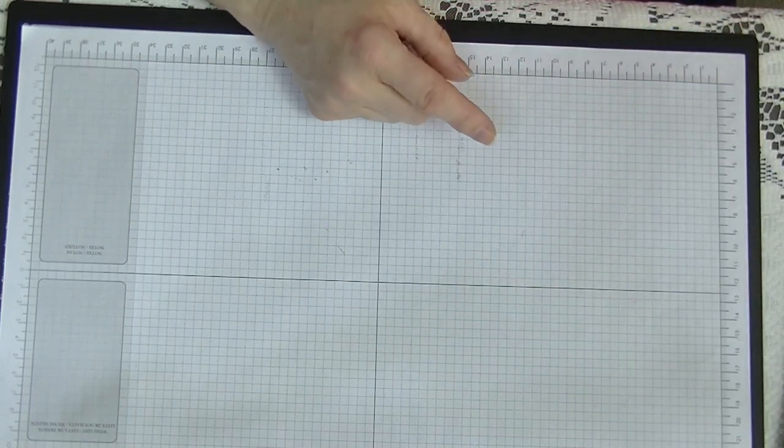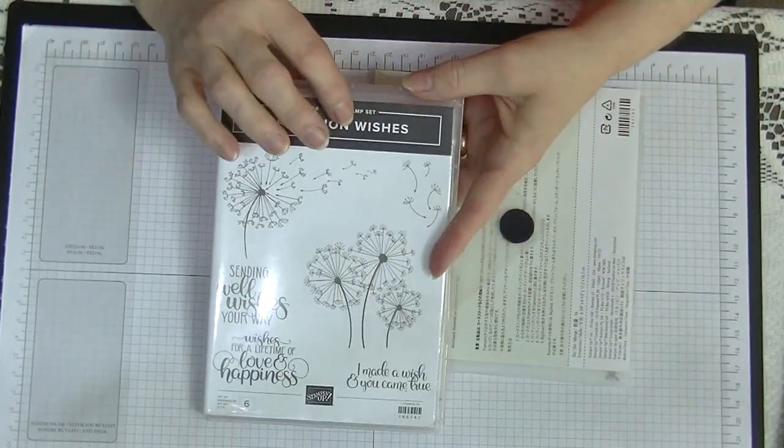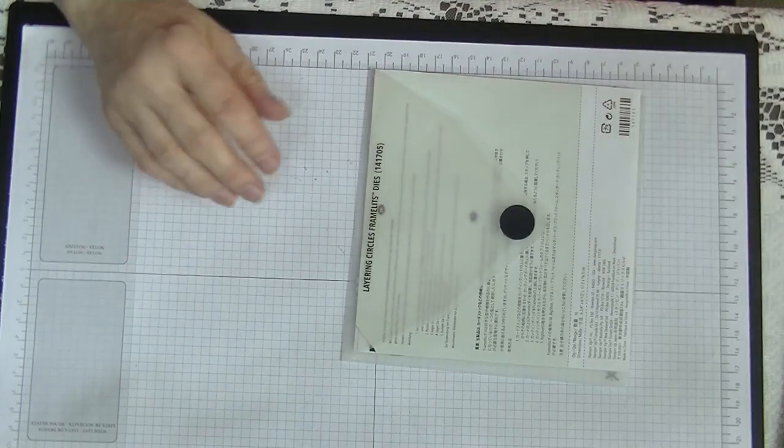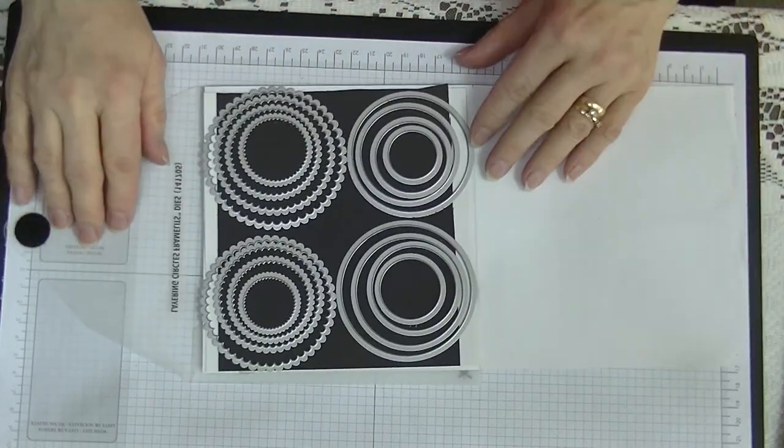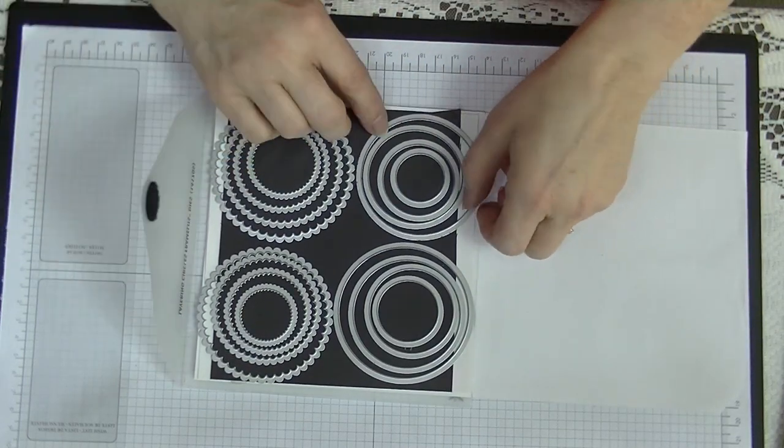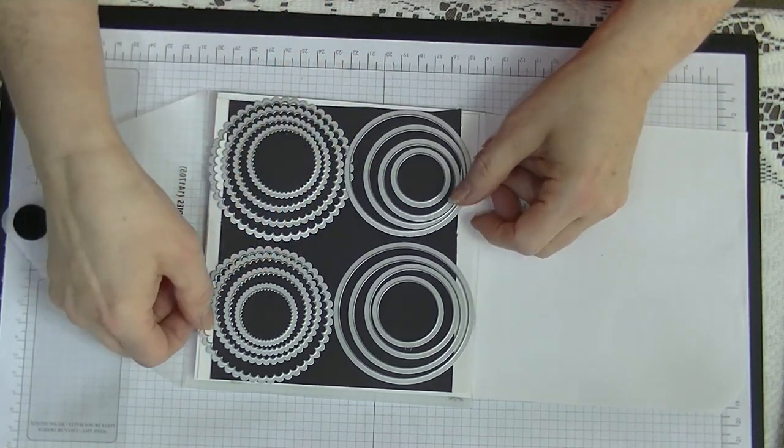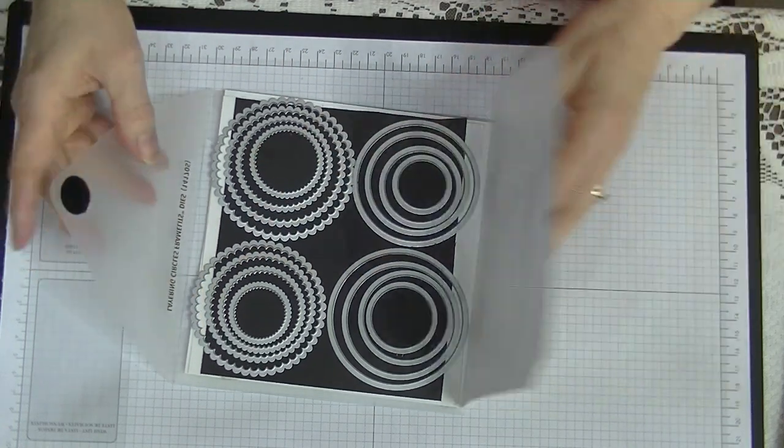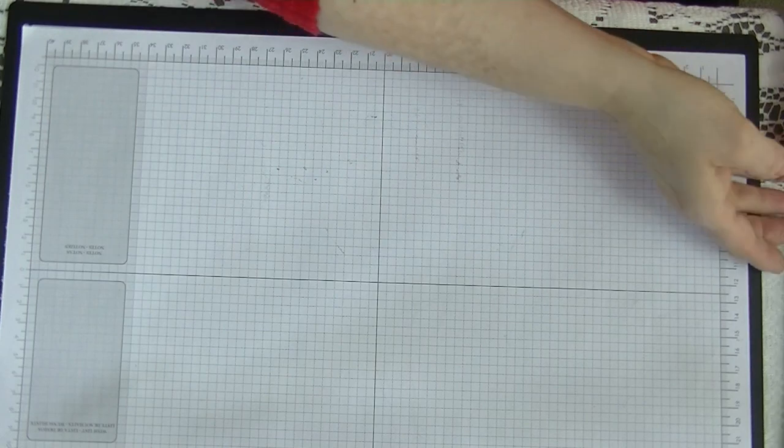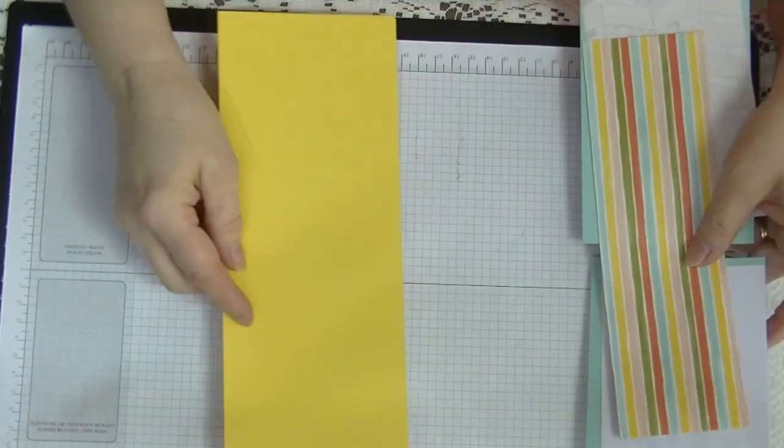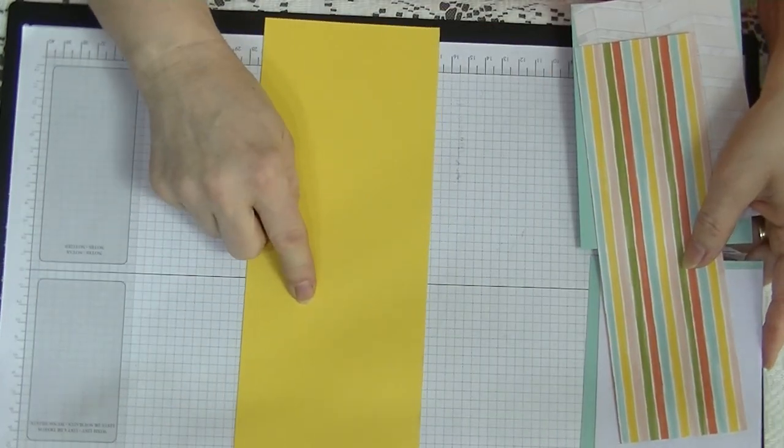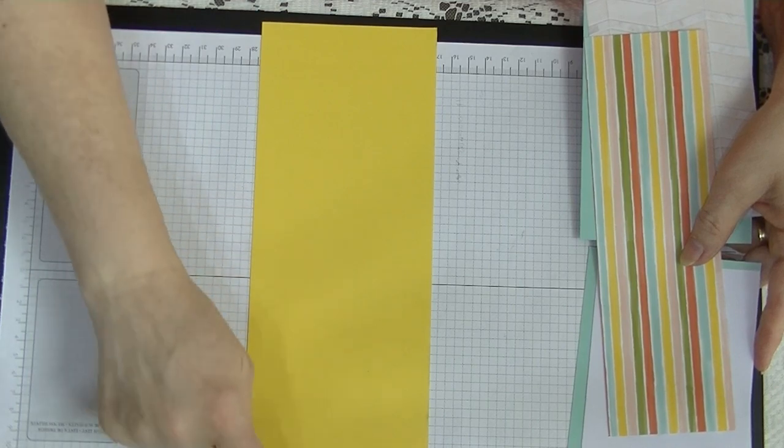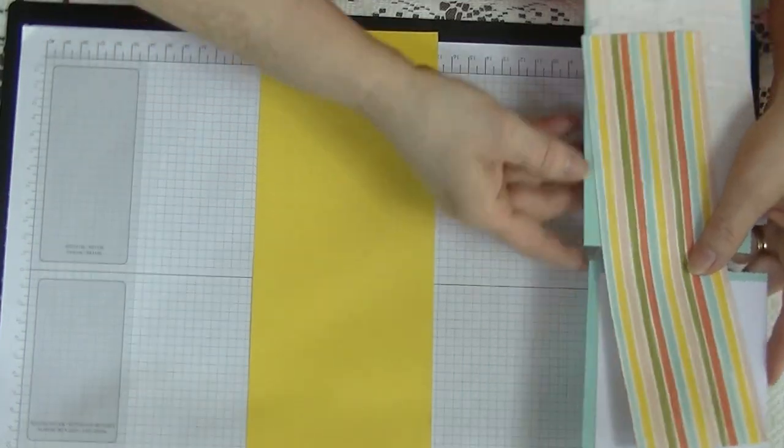We're going to use the Dandelion Wishes for this Sending Well Wishes Your Way stamp, and I'm going to use the Layering Circles, which is the second size down in both the plain and the scalloped. That's virtually all we need, except for our pieces. Our cardstock here is Daffodil Delight, and this measures 11 3 quarters by 4 1 8.